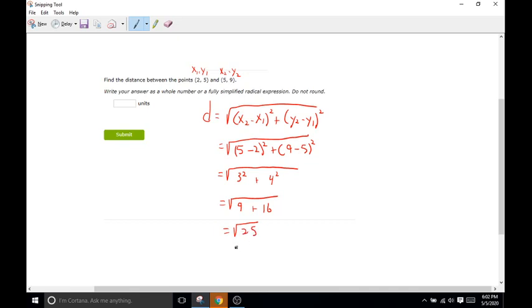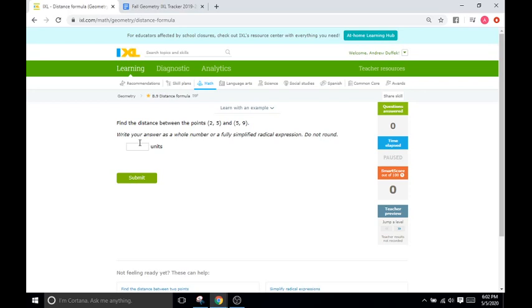Now the square root of 25 is what? What times what is 25? Or what times itself is 25? And that is going to be 5. 5 times 5 is 25, right? So the square root of 25 is just plain old 5. So the distance between those two points is going to be 5 units.